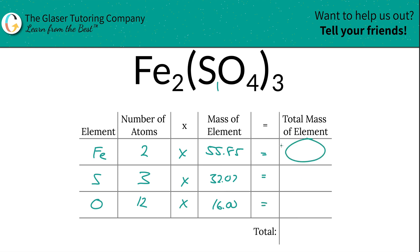To find the total mass of each element in the compound, multiply across the row. The total mass of iron is about 111.7, sulfur is 96.21, and oxygen is 192. To find the total mass of the entire compound, add up all the total masses of each element: 399.91. That's the first step—finding the total mass of the entire compound.